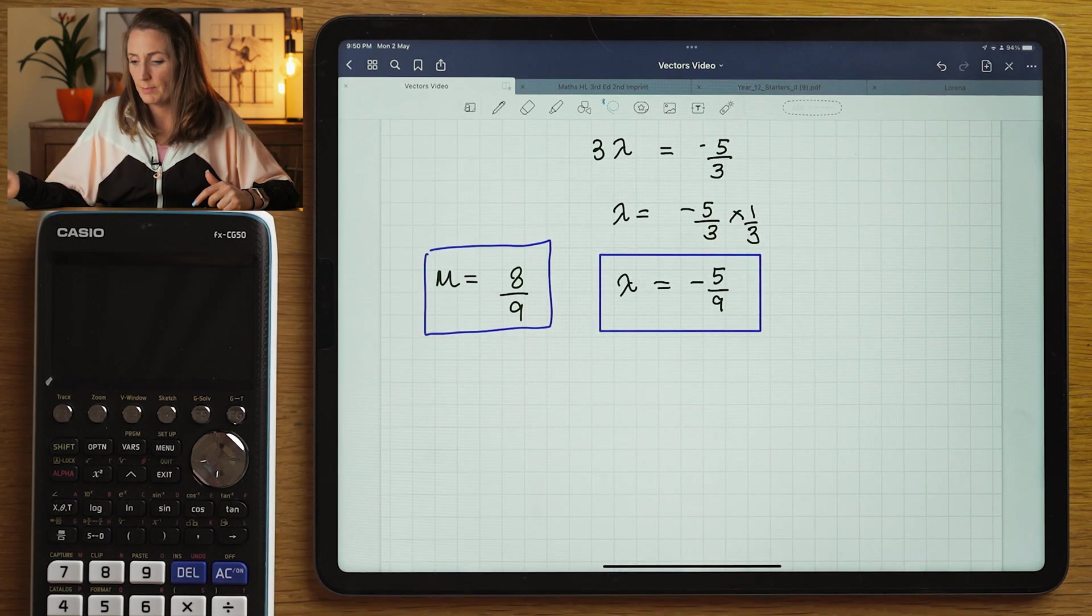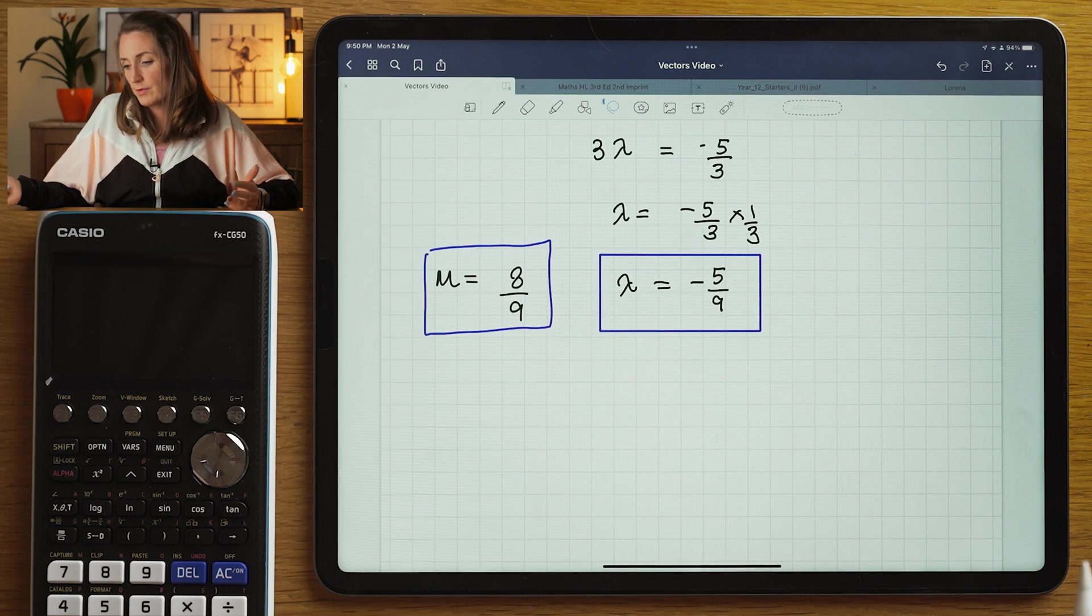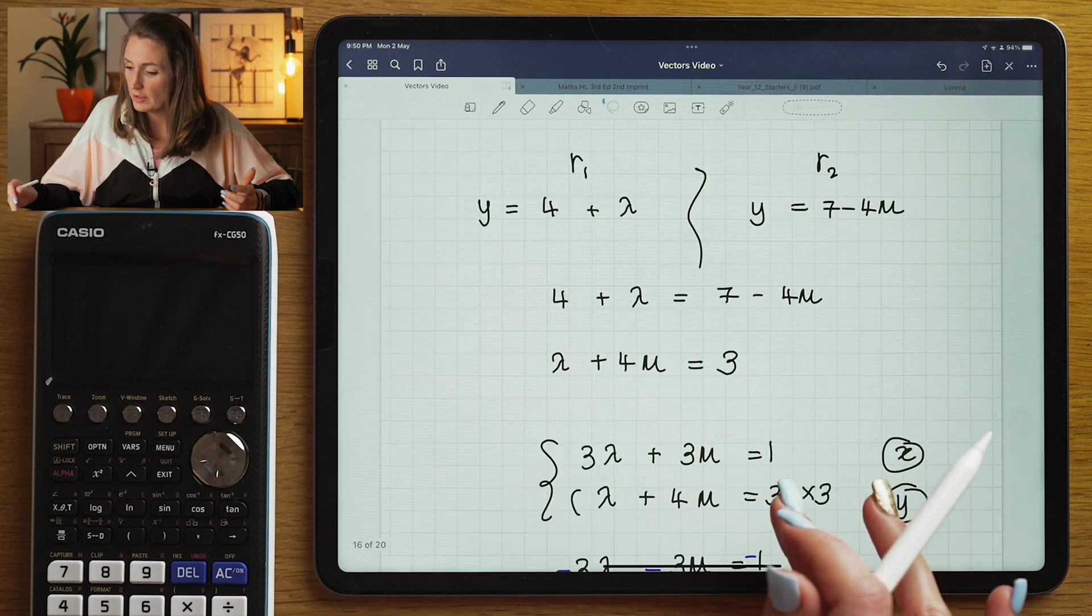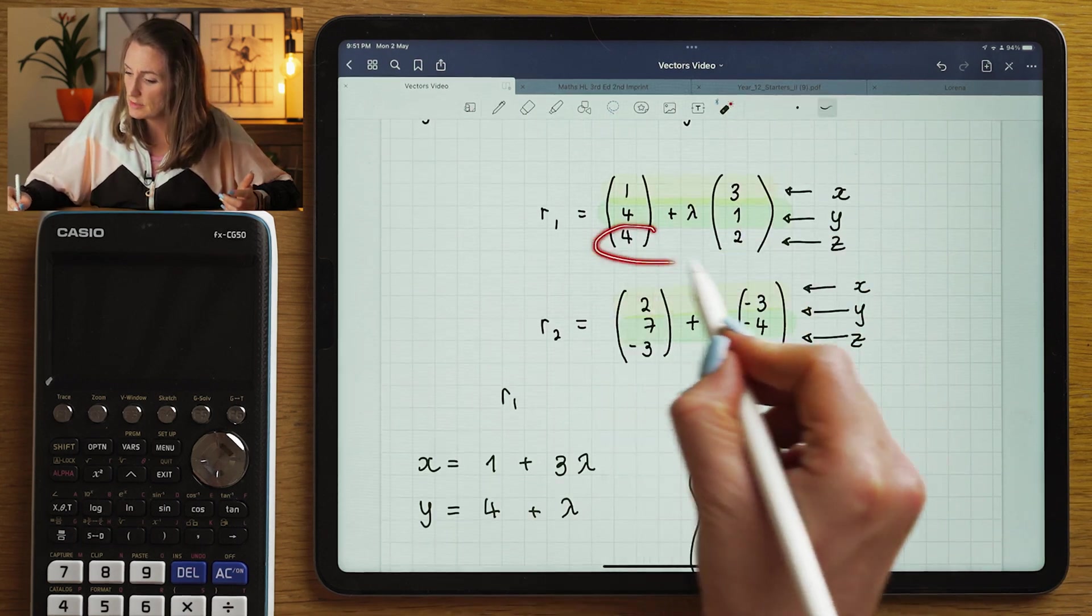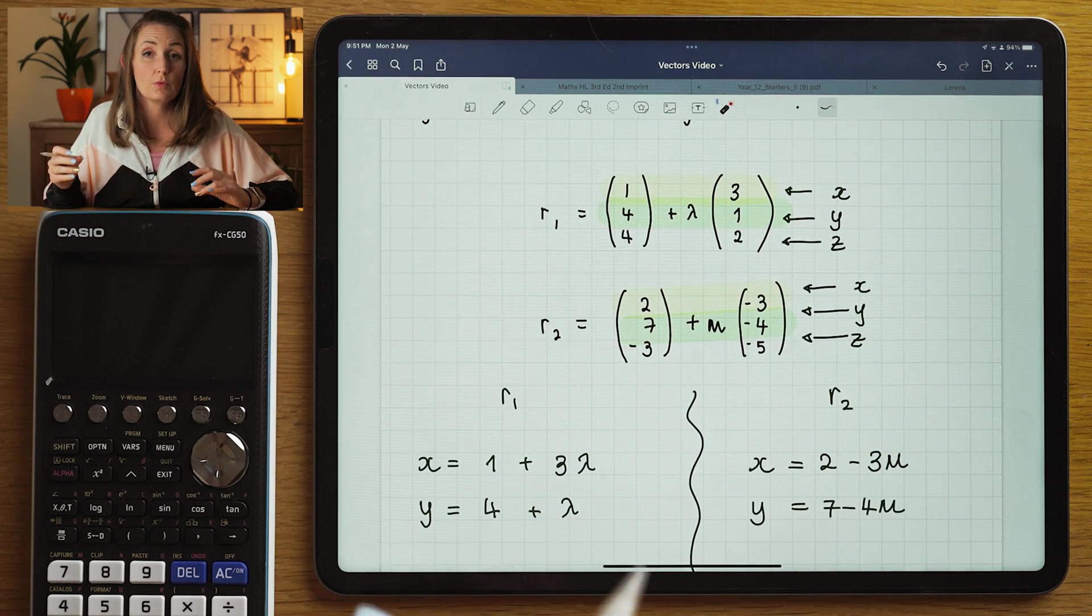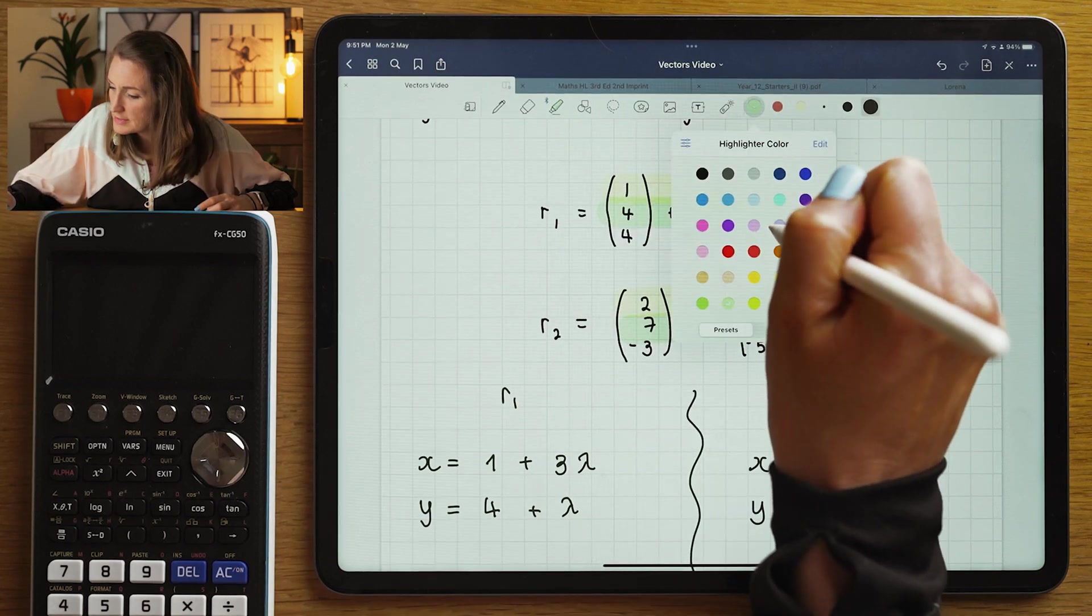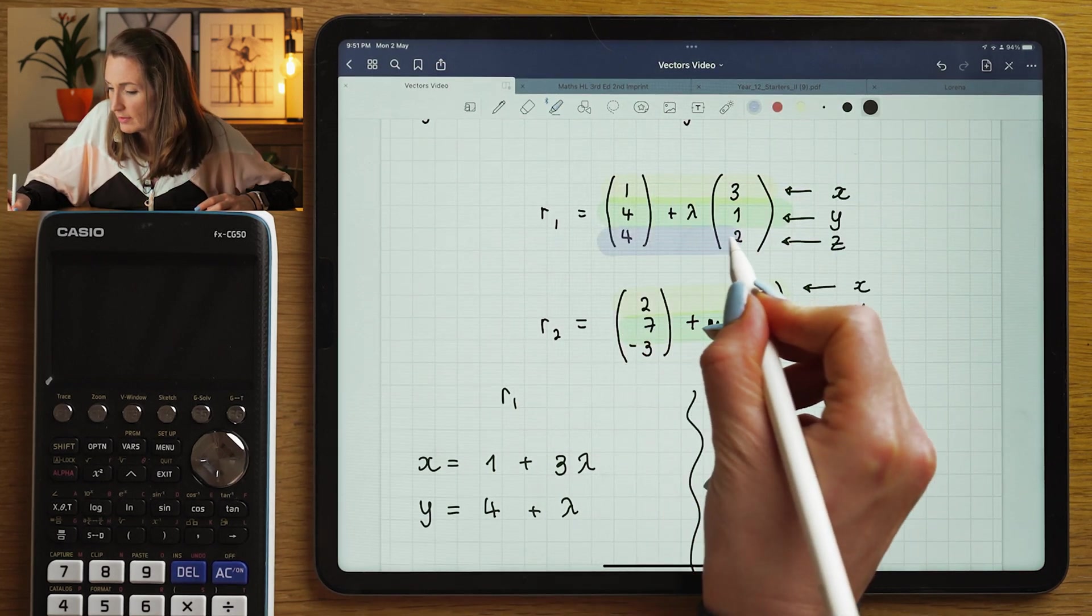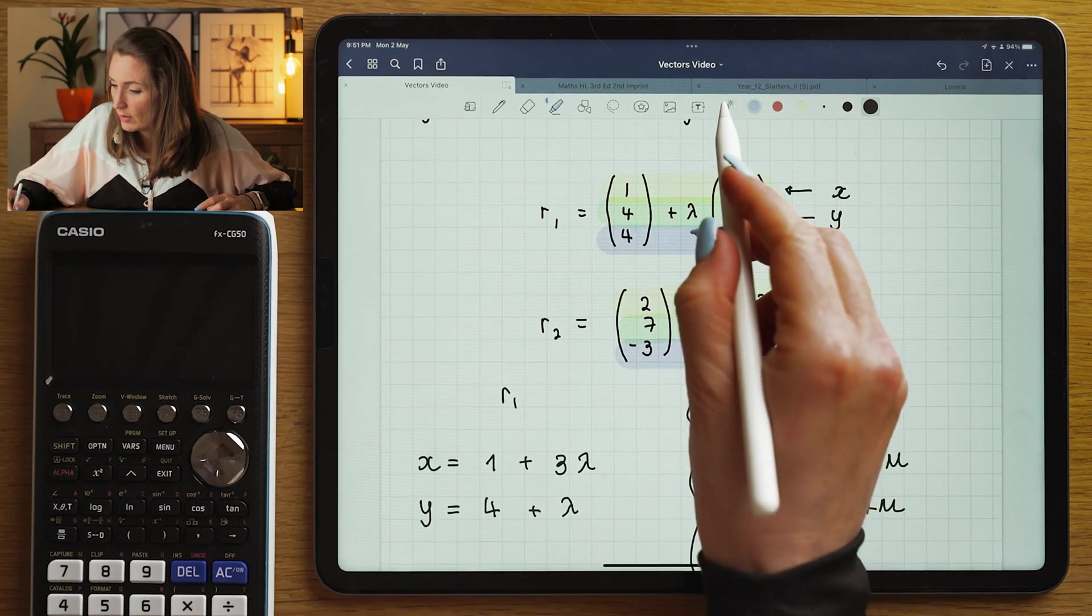So at this point you might be saying, well, this looks like it will solve simultaneously. But what you're going to do now is you're going to go back to your equation and you're going to look at your z's. And you're going to see if this lambda and this mu will also work for the z's. So you're going to be testing it if you're going to get the same answer if I put in lambda here and if I put in mu here.